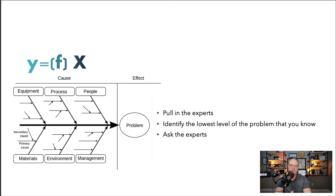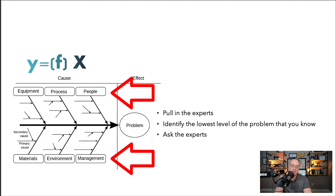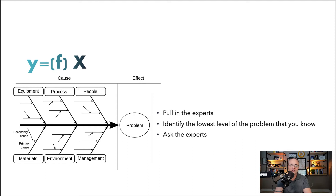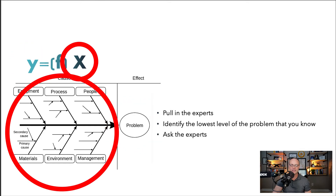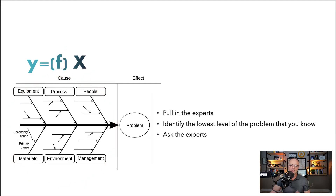You might be asking, why is Y equals a function of X? Y equals f(X) just means the Y output — the output of a process — is a function of all the X inputs. When you're looking at an Ishikawa or a fishbone, the problem at the head is the output, the Y. All the bones are the X inputs, and one of these X's, or a combination of multiple X's, is causing that output, that problem. Y is the output; X is the input.